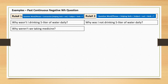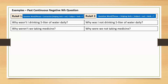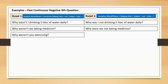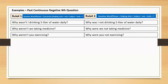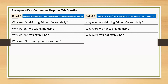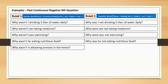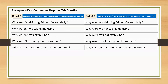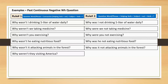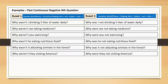Similarly: Why weren't we taking medicine? Why were we not taking medicine? Why weren't you exercising? Why were you not exercising? Why wasn't he eating nutritious food? Why was he not eating nutritious food? Why wasn't it attacking animals in the forest? Why was it not attacking animals in the forest? Why weren't they visiting America? Why were they not visiting America?